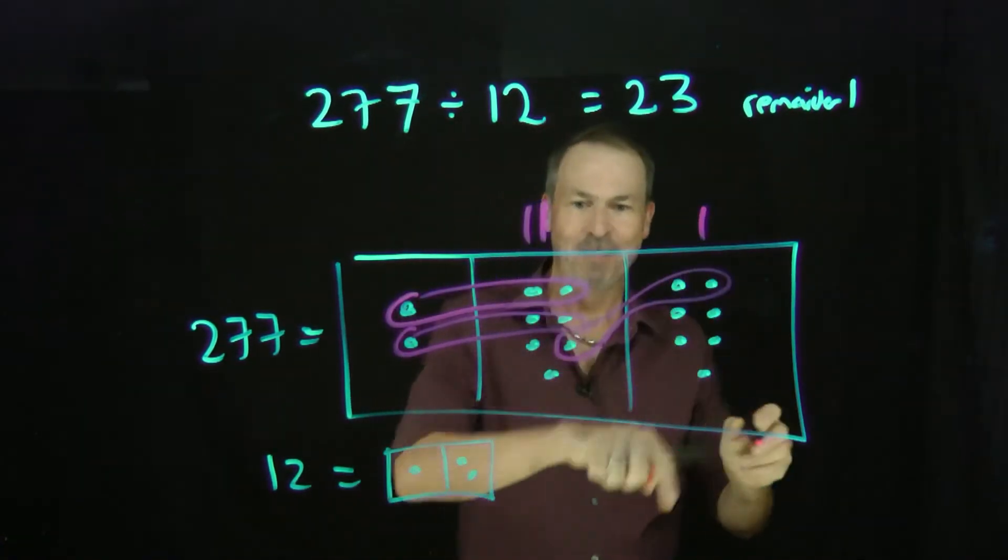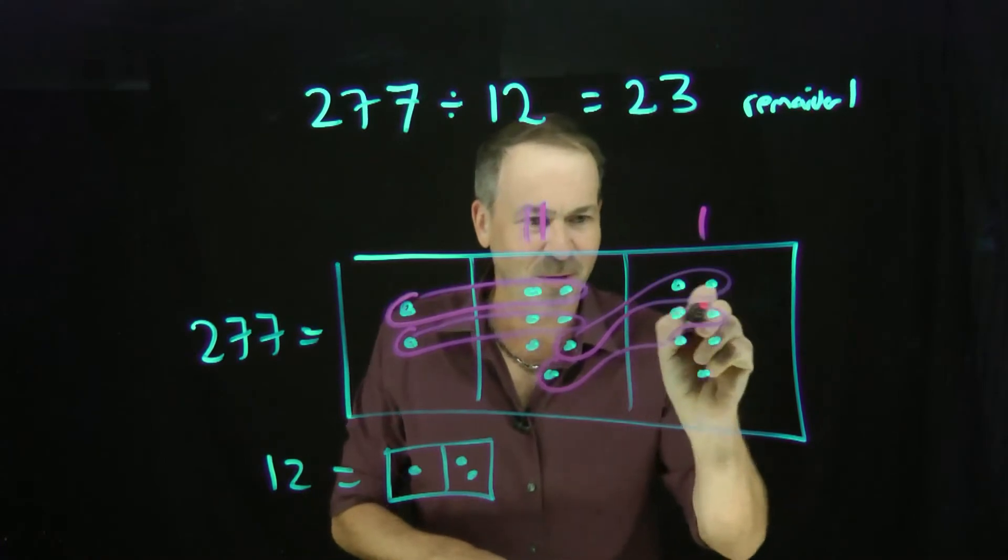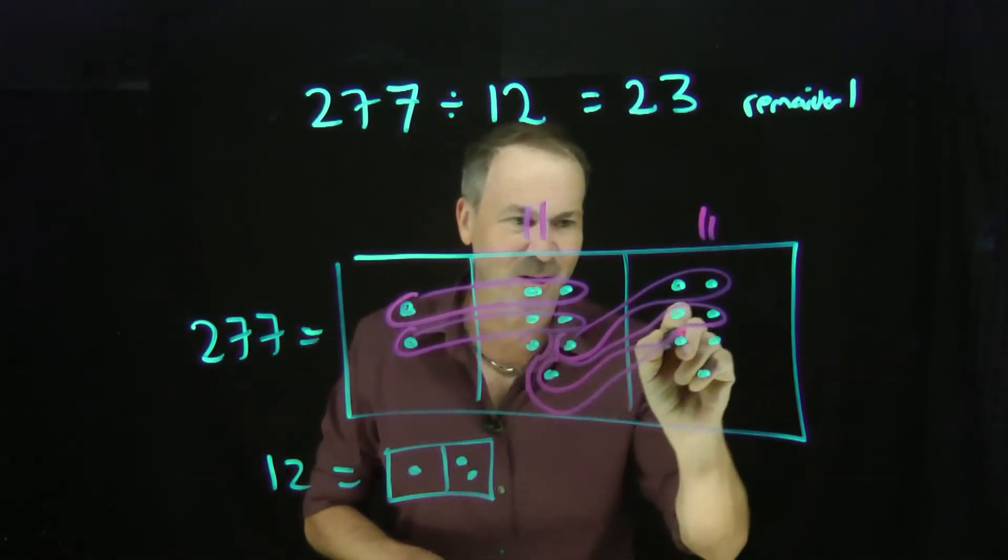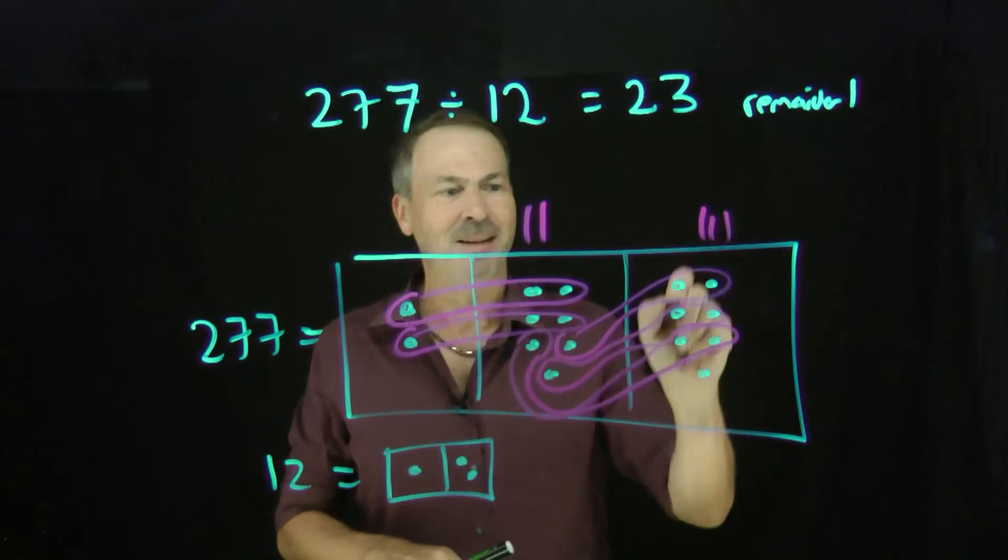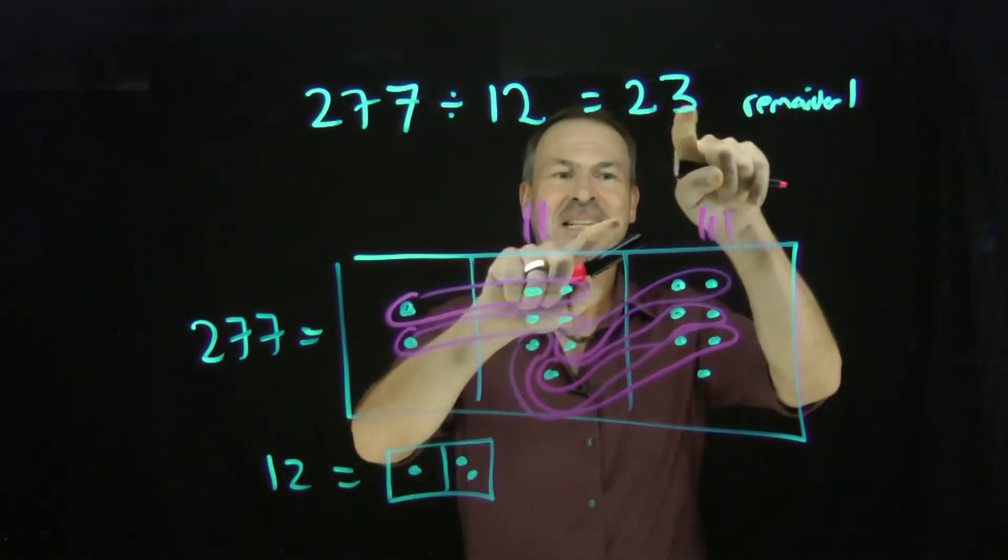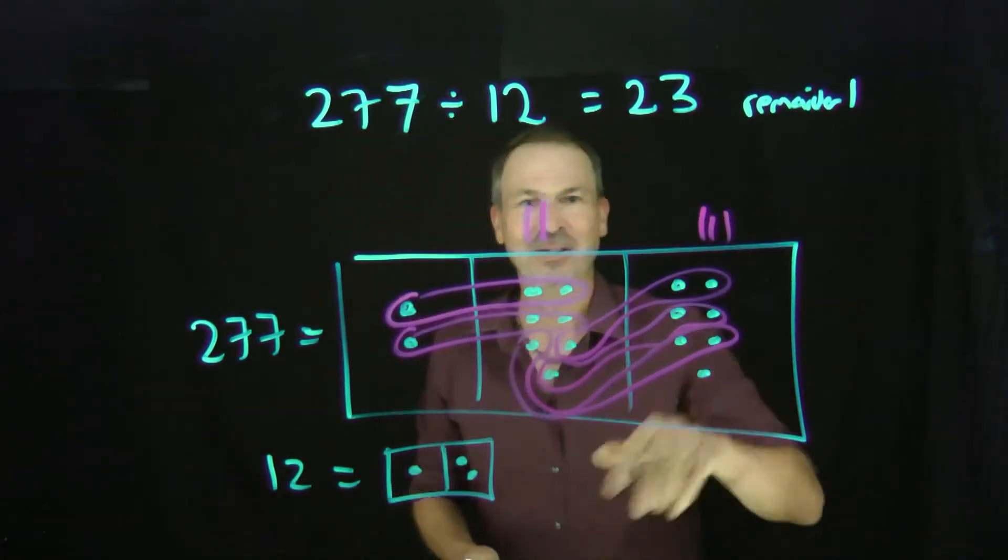And 12 dots are also really right here. If I unexplode, 12 dots right there. And 12 dots, whoops, right there as well. And the weird loop, 12 dots right there as well. Yep, I'm seeing 23 with a remainder of one dot. Whoa.